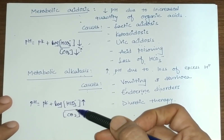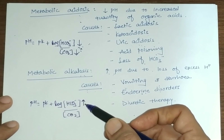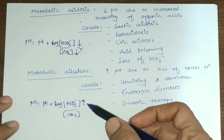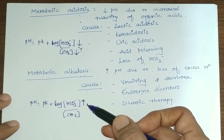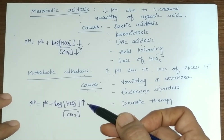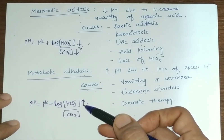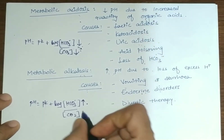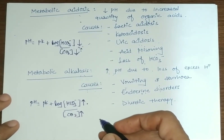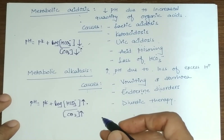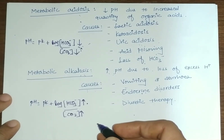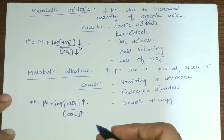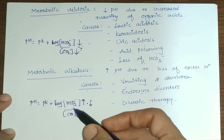In uncompensated metabolic alkalosis, HCO3⁻ ion concentration increases. For respiratory compensation, when HCO3⁻ increases and pH rises, ventilation decreases; this hypoventilation raises CO2 concentration. For renal compensation, when H+ concentration decreases, H+ secretion is reduced through the renal tubule, and decreased H+ secretion also reduces bicarbonate ion reabsorption, so HCO3⁻ concentration decreases.